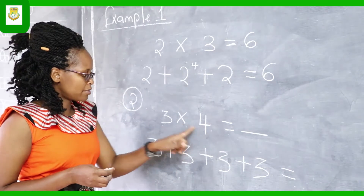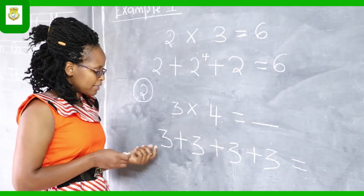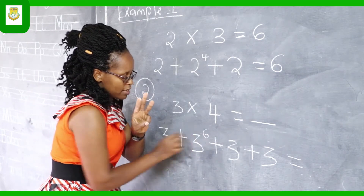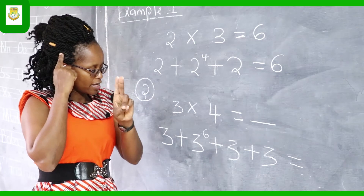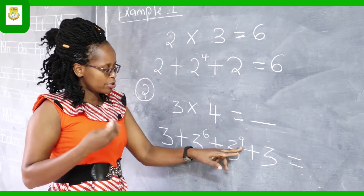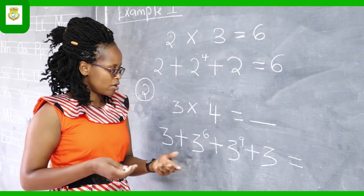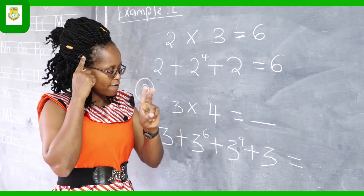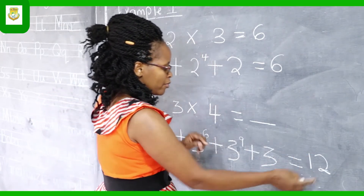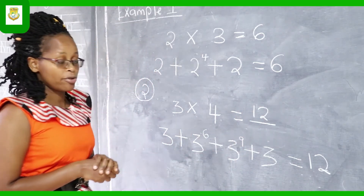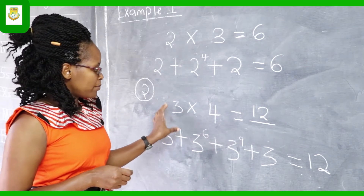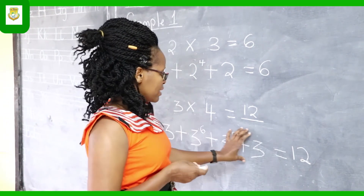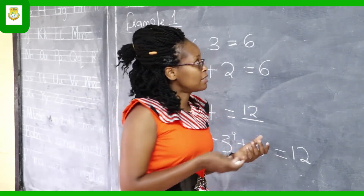Let's find our answer. We start by adding the first two threes: three, four, five, six. We write six here. Then six plus three: six, seven, eight, nine. We write nine here. We continue adding and write our answer above so we don't miss any. Nine plus the next three: nine, ten, eleven, twelve. Twelve is our final answer, and we reflect that in the multiplication sentence above. This is how we work out multiplication as repeated addition.